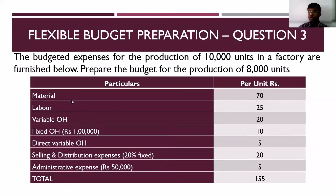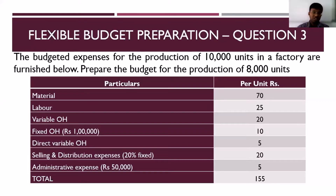First is material — we know it's a variable cost. Then we have labor, which is also a variable cost. Then we have variable overhead, which is also a variable cost. We have fixed overhead which is one lakh, then direct variable overhead which is five rupees, then selling and distribution expenses which is a semi-variable cost, and administrative expenses of 50,000 which is a fixed cost. Based on these details we will prepare the flexible budget.